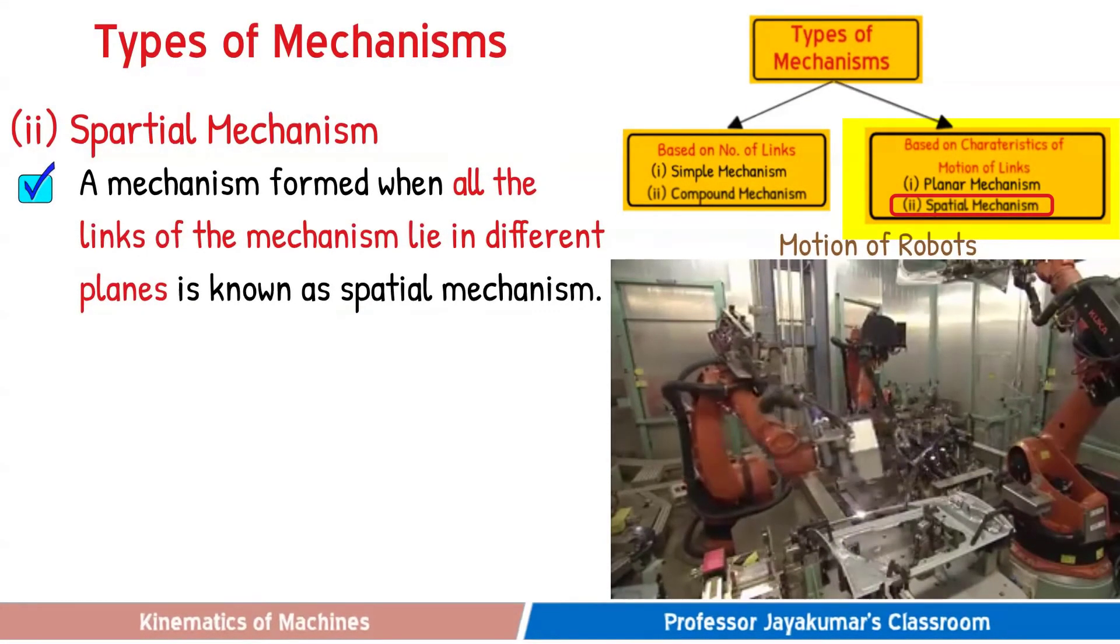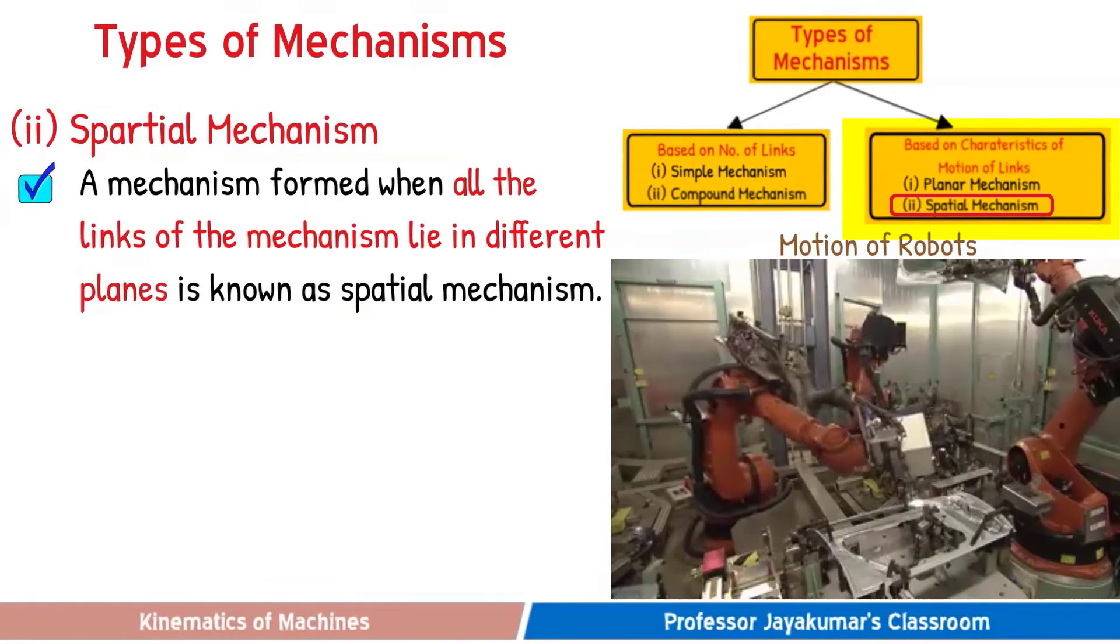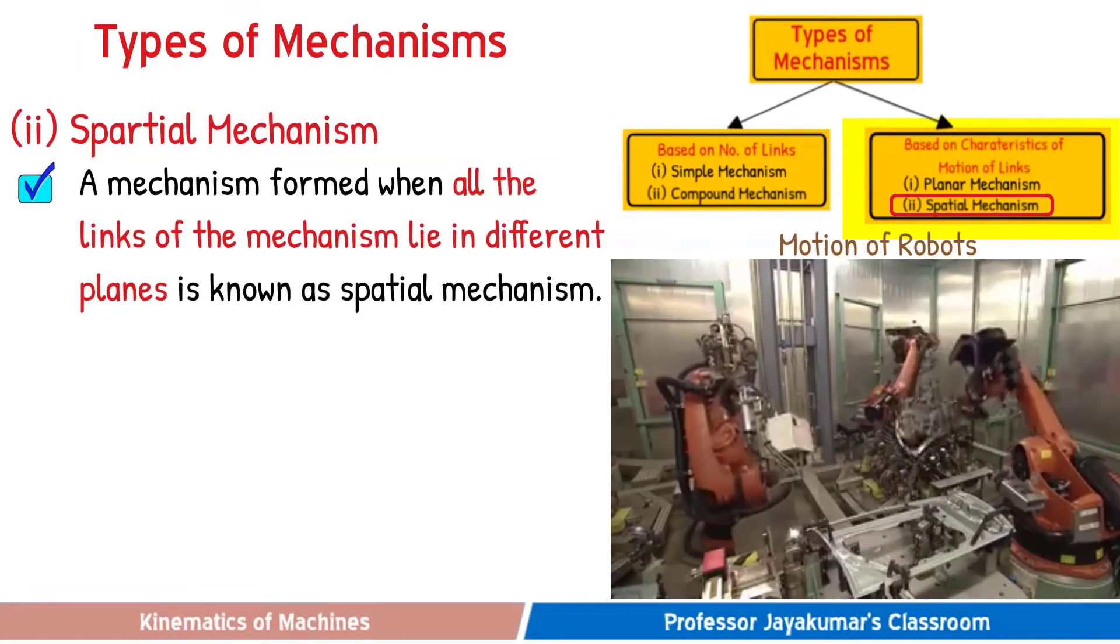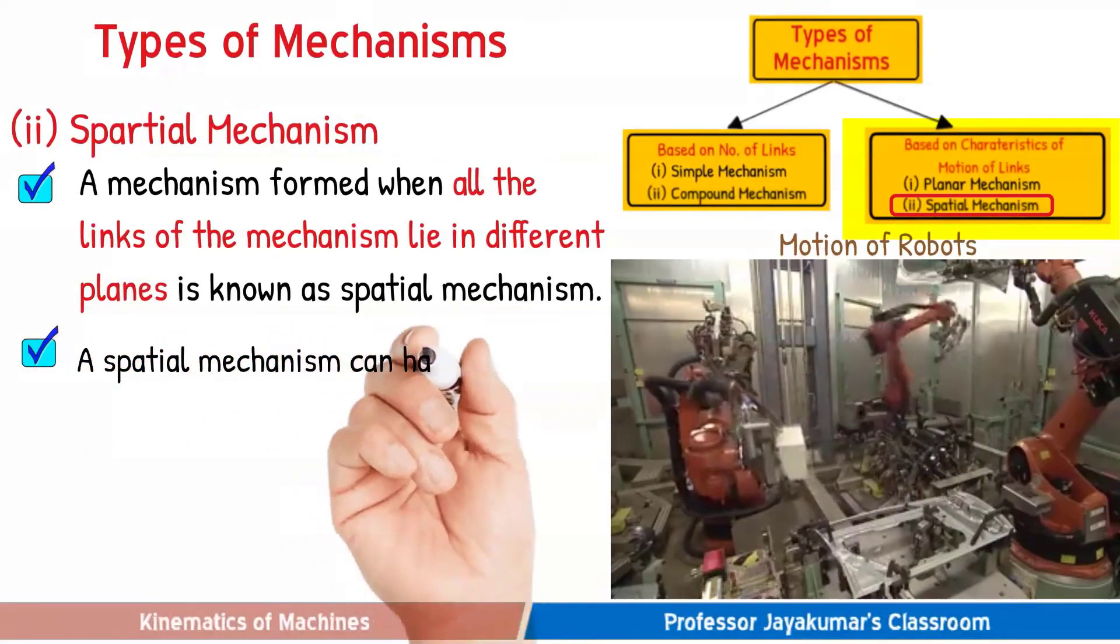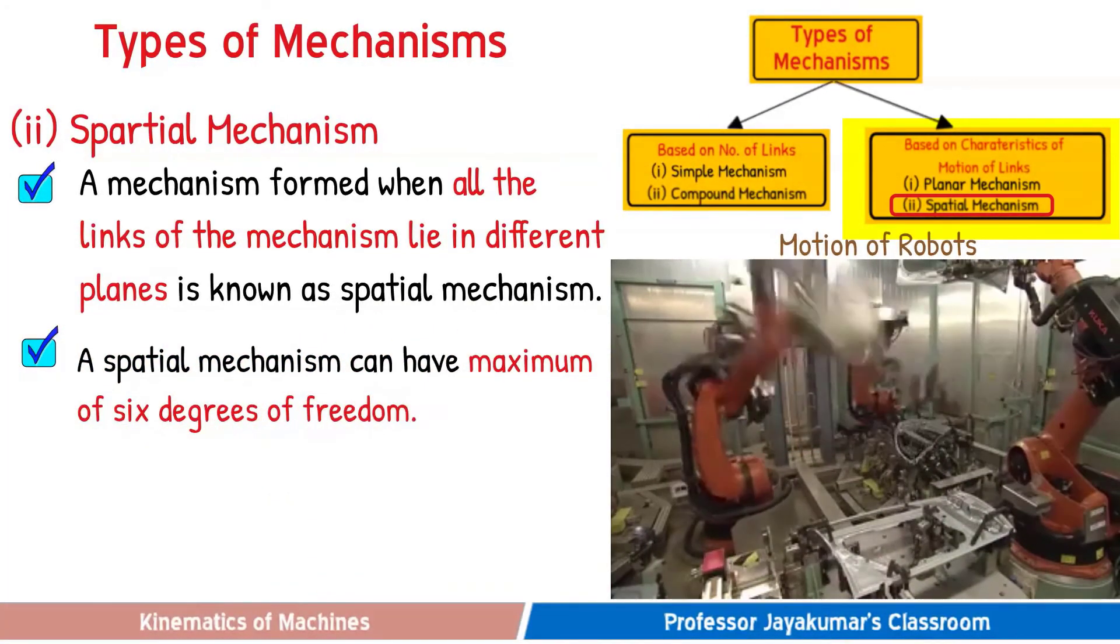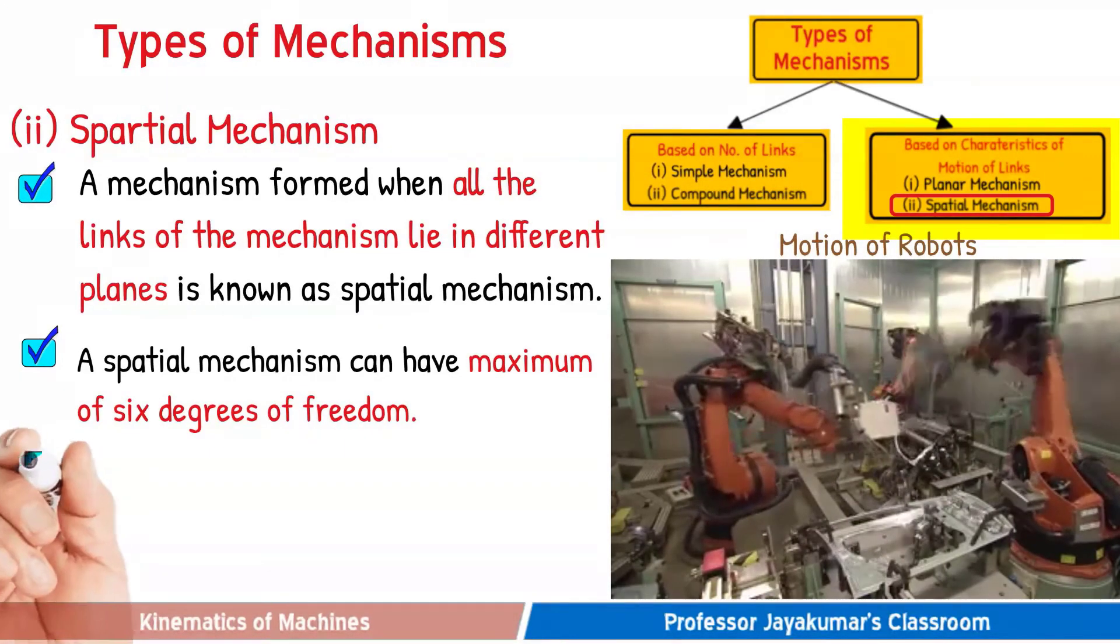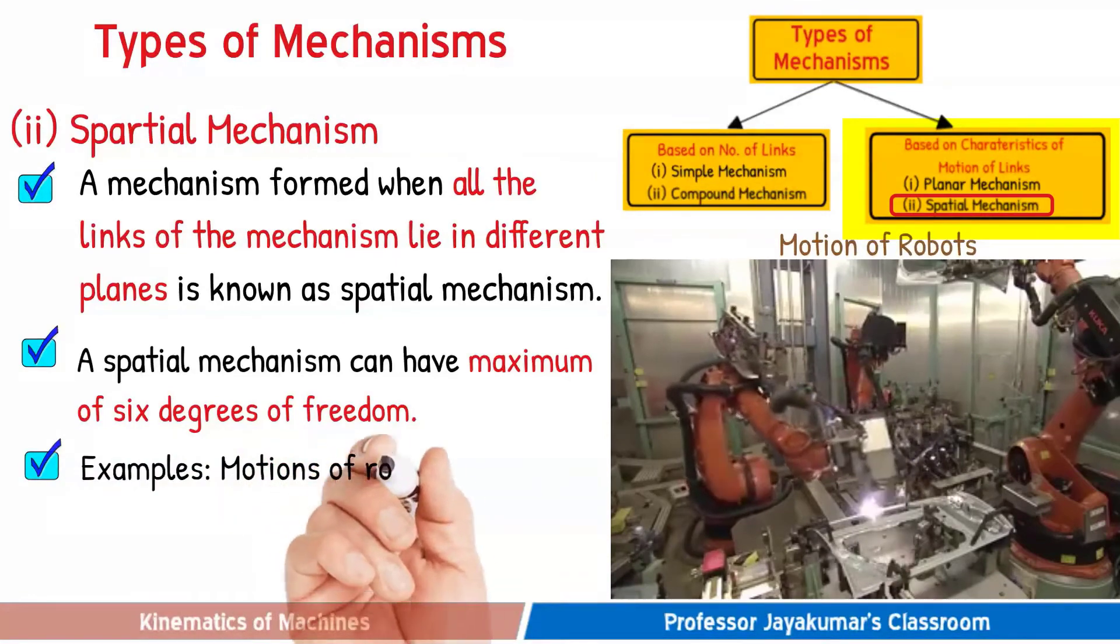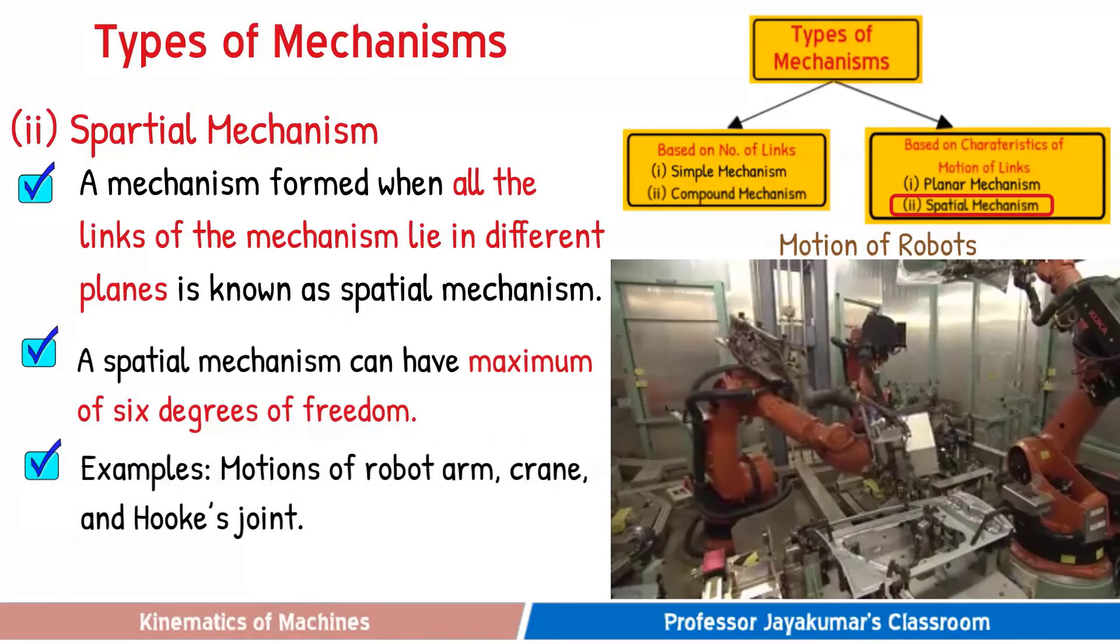A spatial mechanism can have maximum of six degrees of freedom, three translatory motions in X, Y, and Z axis and three rotational motions about X, Y, and Z axis.